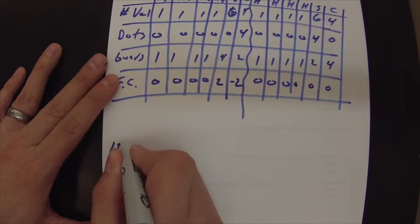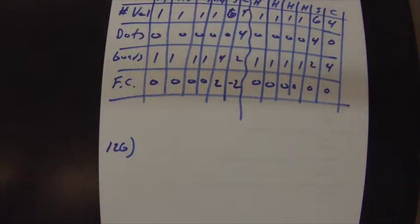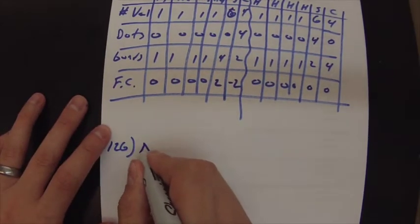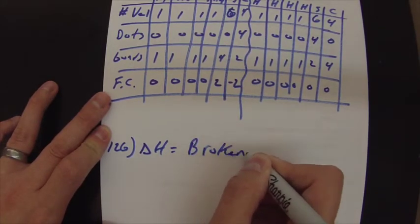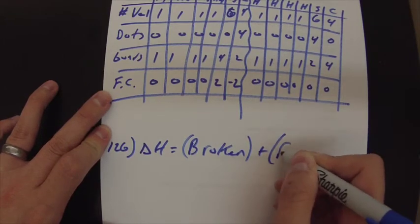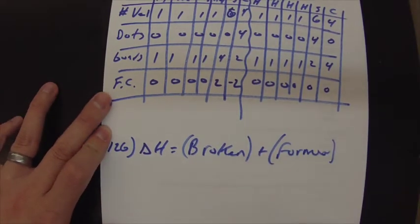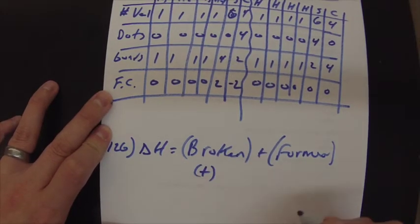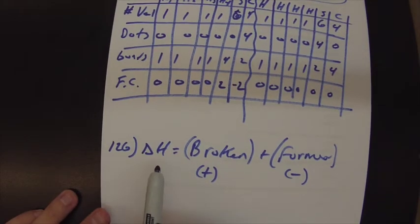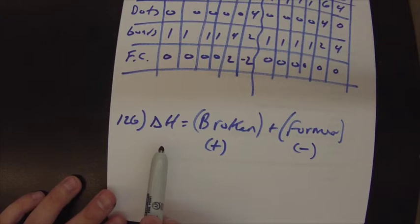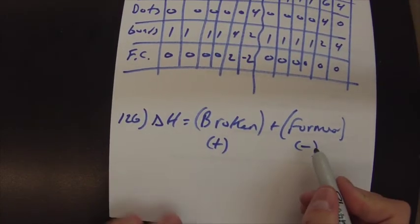Alright, last problem, 126. Alright, 126 is talking about bonds breaking and forming for an endothermic reaction. So remember, your delta H equals broken plus formed. But this is a positive number, and this is a negative number. So it's really broken minus formed, if that makes any sense. So if we want an endothermic reaction, we want a positive delta H. And if we want a positive delta H, then our broken needs to be greater than our formed.